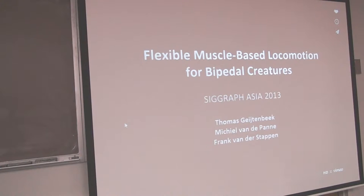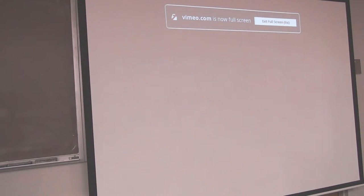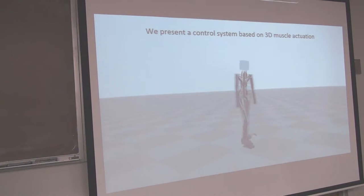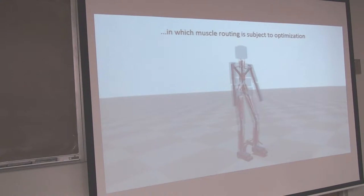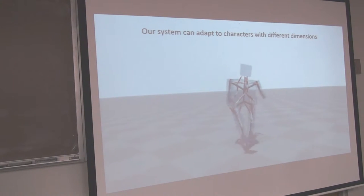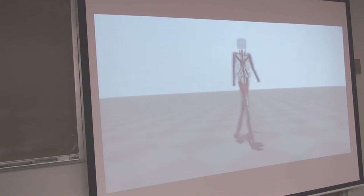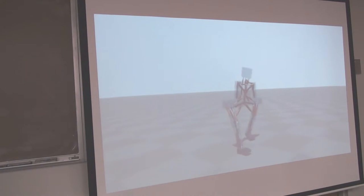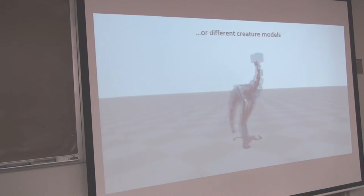They took a physics engine and applied evolutionary optimization to it. This is after many, many generations of evolutionary optimization. The way they measure fitness is they see how far the thing walks before it falls over, and they built these robots with various sizes. As you change the shape of the body and then evolve to walk with it, it adapts in ways that look kind of like how people adapt to funny body shapes.